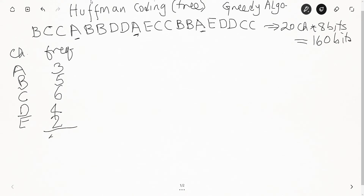The way Huffman coding works is that characters which appear the most should be represented using the least amount of bits, instead of the standard 8-bit ASCII. Now I'm going to draw the Huffman tree.